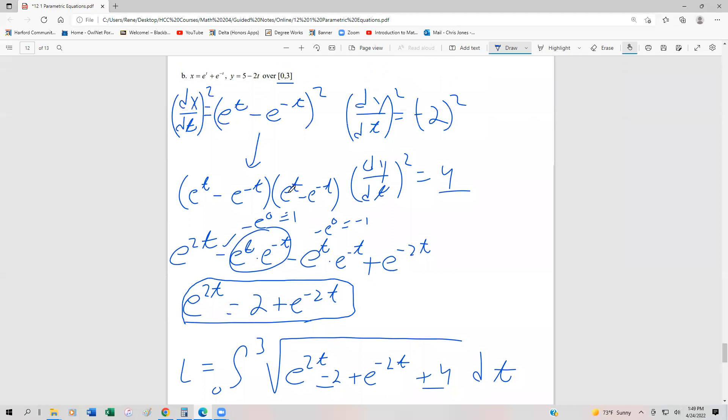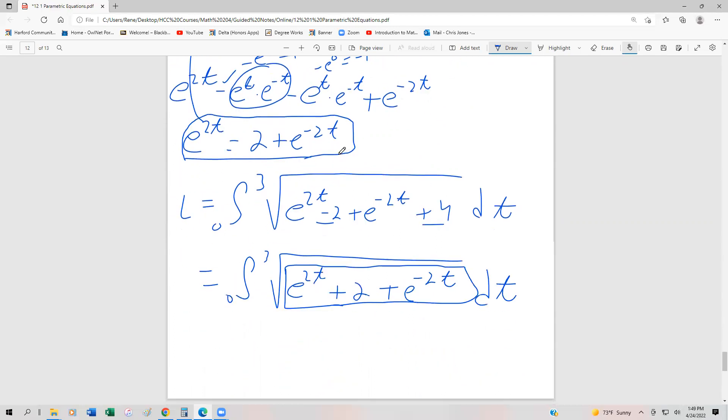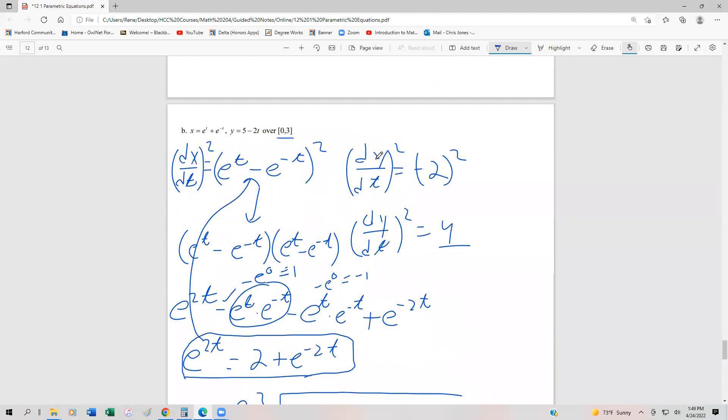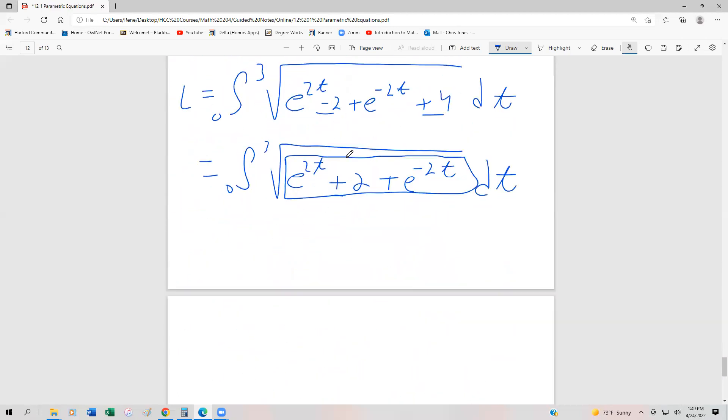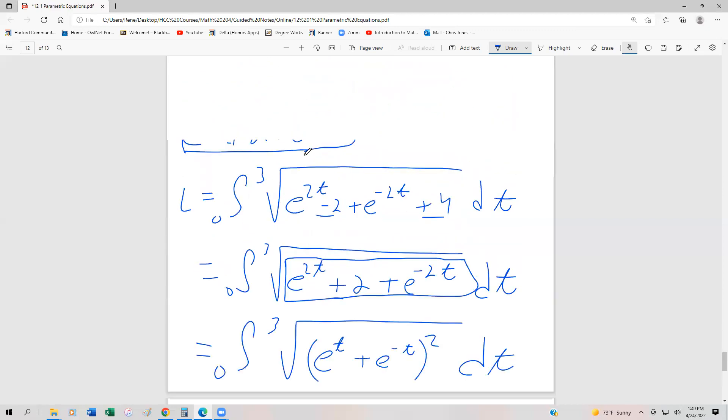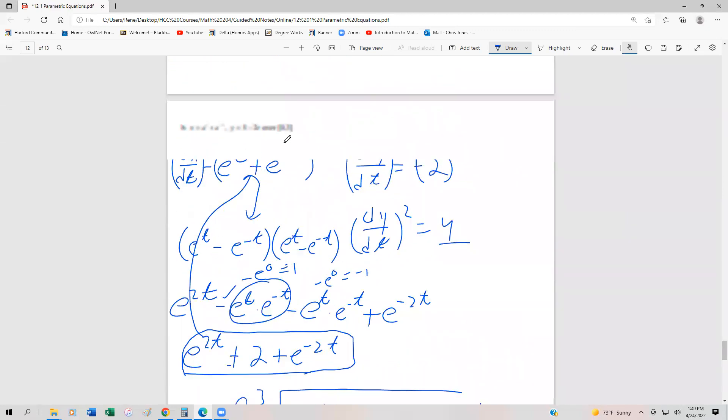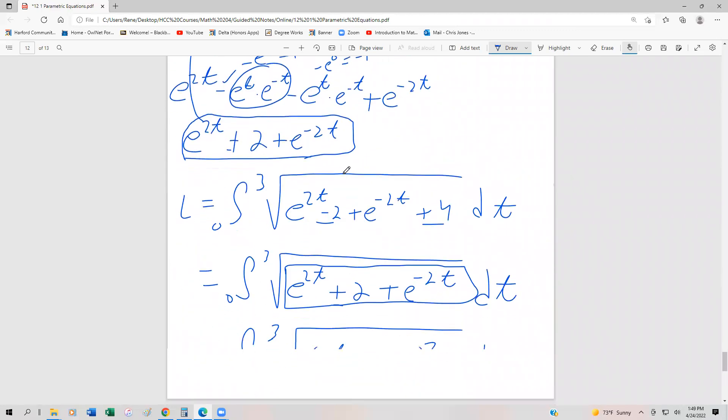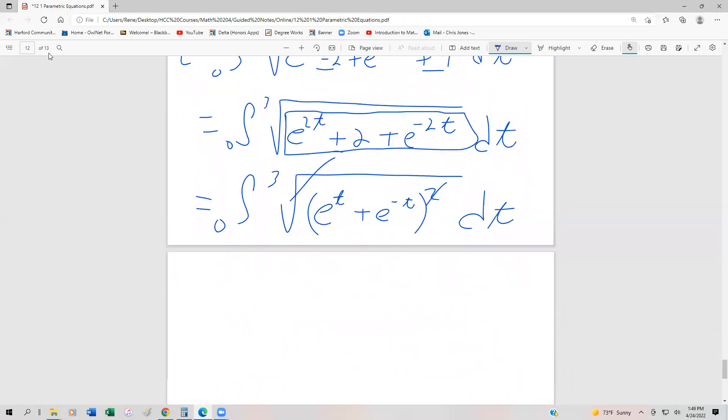Remember, this was equal, all the way back up here, to (e^t - e^(-t))². And so what we can do is we can just rewrite it with a plus. So if this were a plus, then this would be a plus as well. So this is going to be equal to, by factoring, the integral from 0 to 3 of √((e^t + e^(-t))²) dt. All I did was change this guy to a plus, and then this just becomes a square. And now this is really nice because those cancel out.